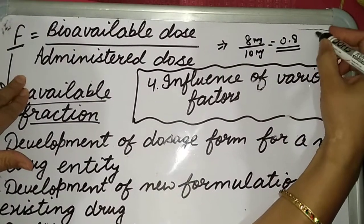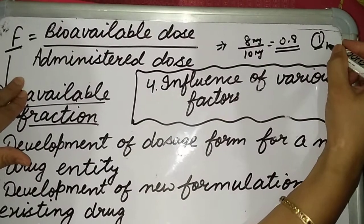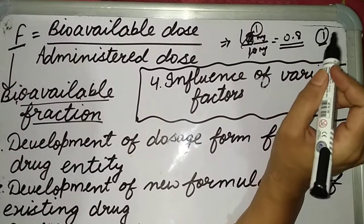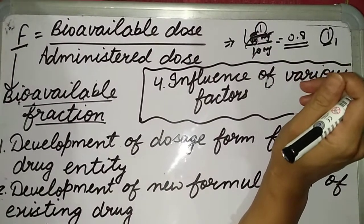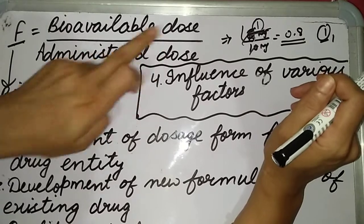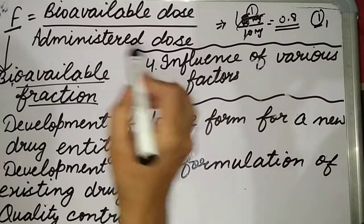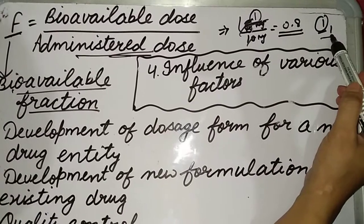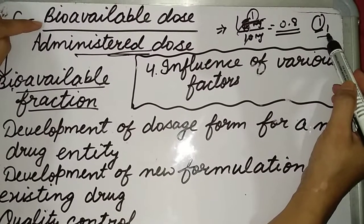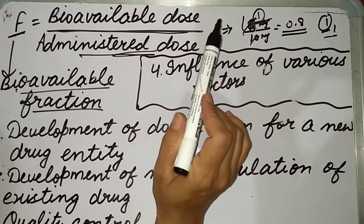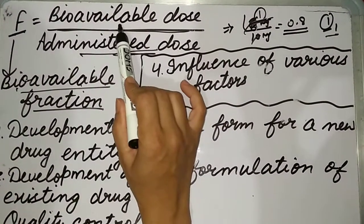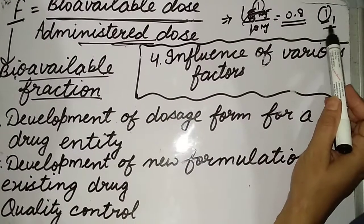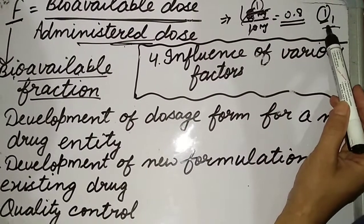The highest bioavailable fraction can be 1. If we give 10 mg and 10 mg reaches the systemic circulation, then it becomes 1. So the highest bioavailable fraction equals 1, and it is determined by dividing the bioavailable dose by the administered dose. If given by the parenteral route, the bioavailable fraction will always be 1 because the whole drug is administered directly into the systemic circulation. However, in other cases, it is always less than 1.